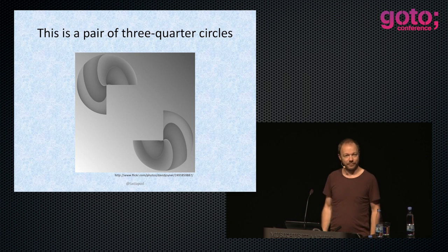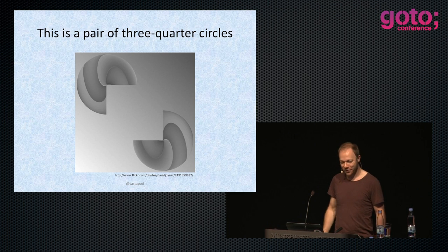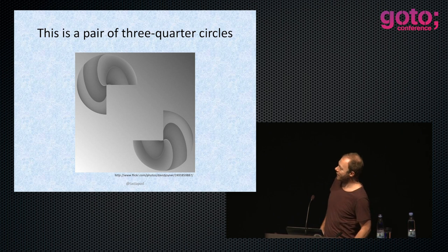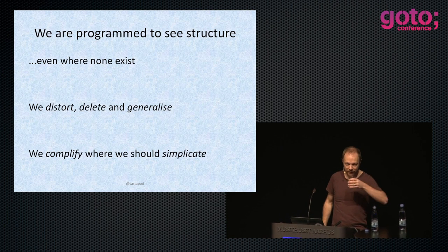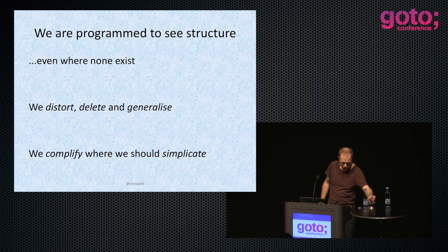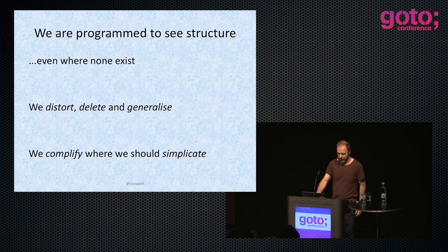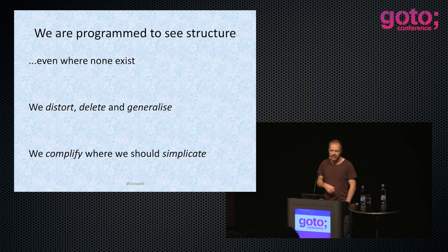You're looking at two three-quarter circles. You think you're looking at a gray square in the middle, don't you? This is how our brain's wired — our brain is wired to make sense of incomplete data, because what we get in life is incomplete data. We're programmed to see structure, even when none exists. So we distort, delete, and generalize. This is one of the core principles of behavioral psychology, and particularly neuro-linguistic programming — NLP.